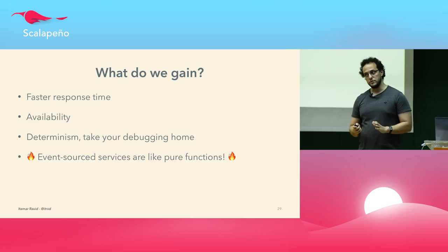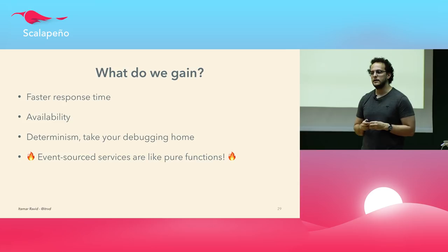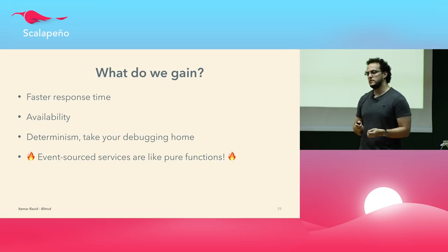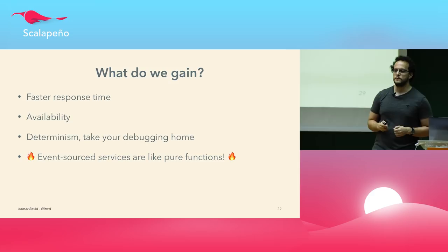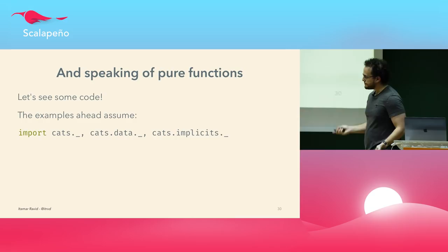There are many more things to say about CQRS and event sourcing, but unfortunately the infrastructure and libraries available for building these microservices today in Scala are not great. You either have to choose between Akka Streams or Akka Persistence — two choices that aren't great if you're into functional programming. But talk to me afterwards; you might find what I'm working on interesting. Speaking of pure functions, let's see some code.